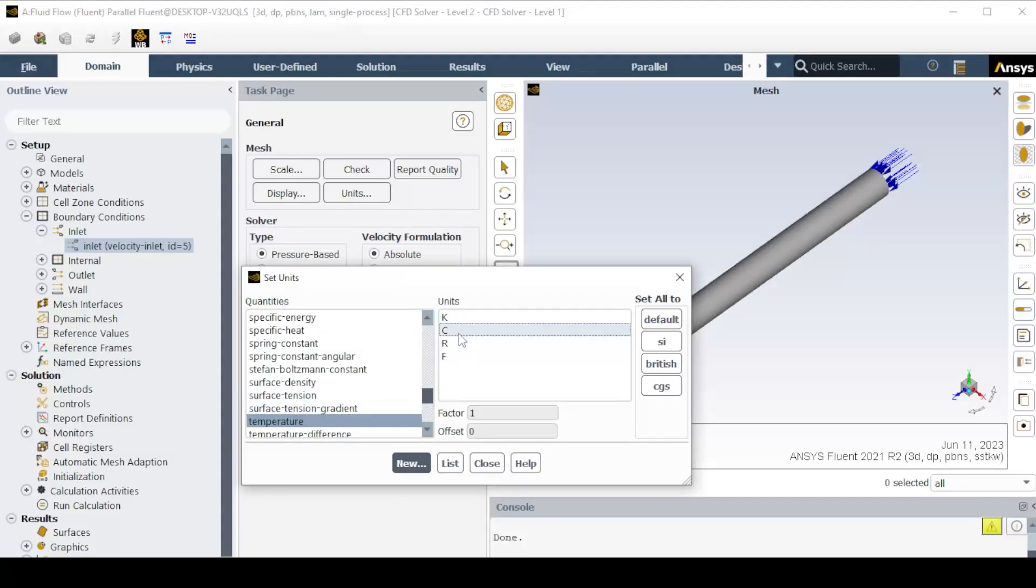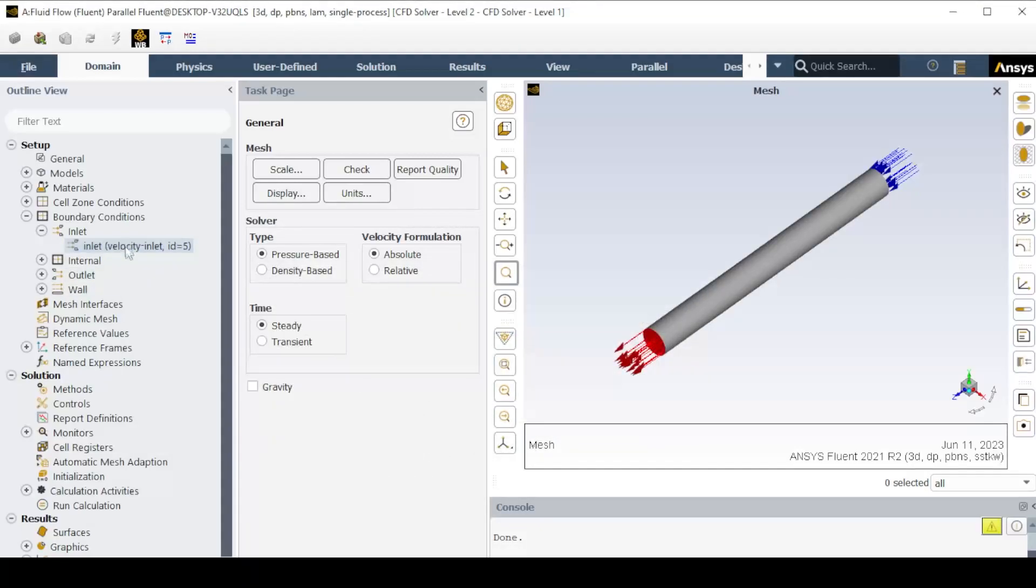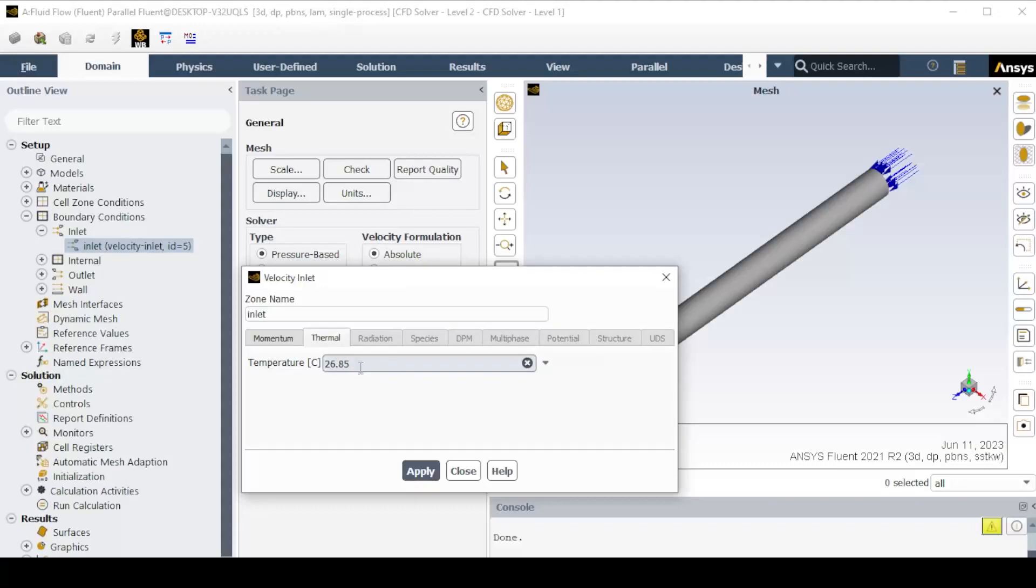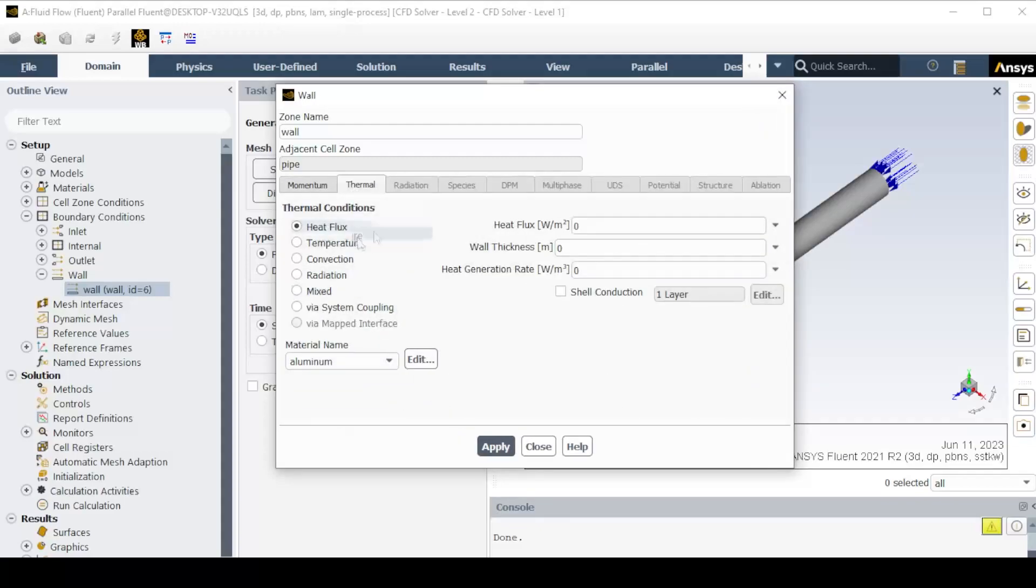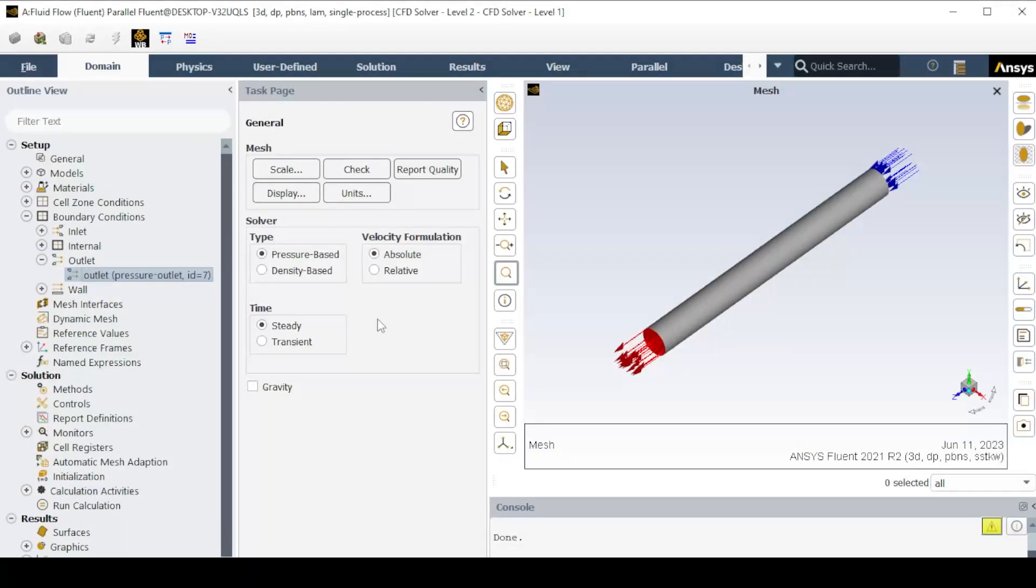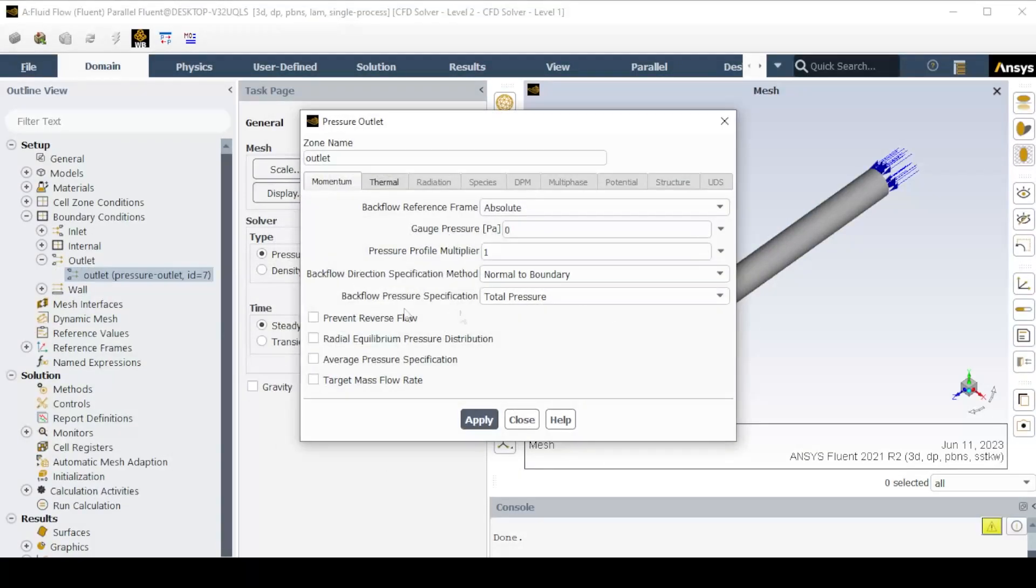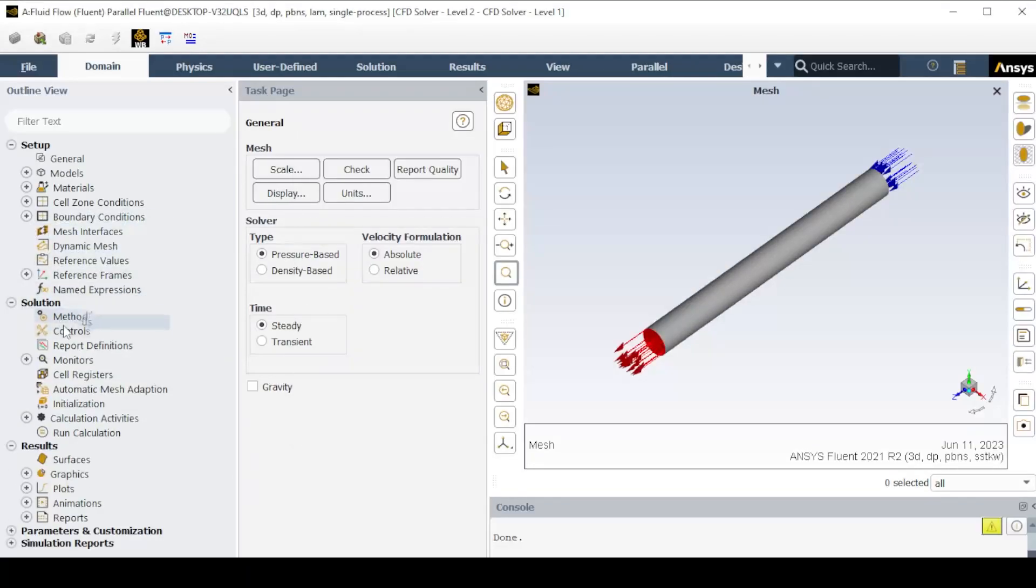You can change any unit under Units tab, as shown for the temperature. Similarly, apply temperature to the wall with no-slip condition. Outlet condition is pressure outlet with default value.